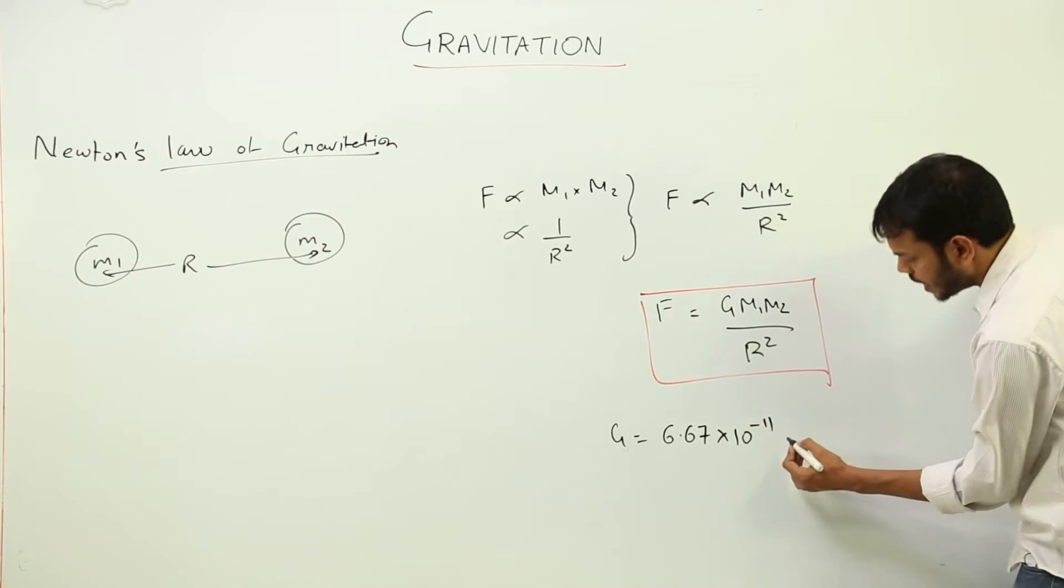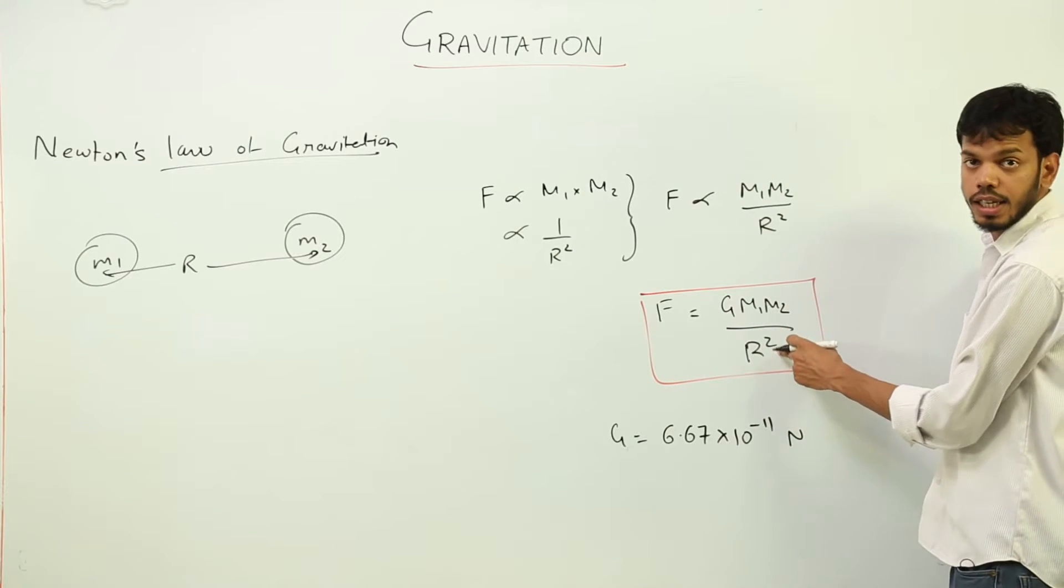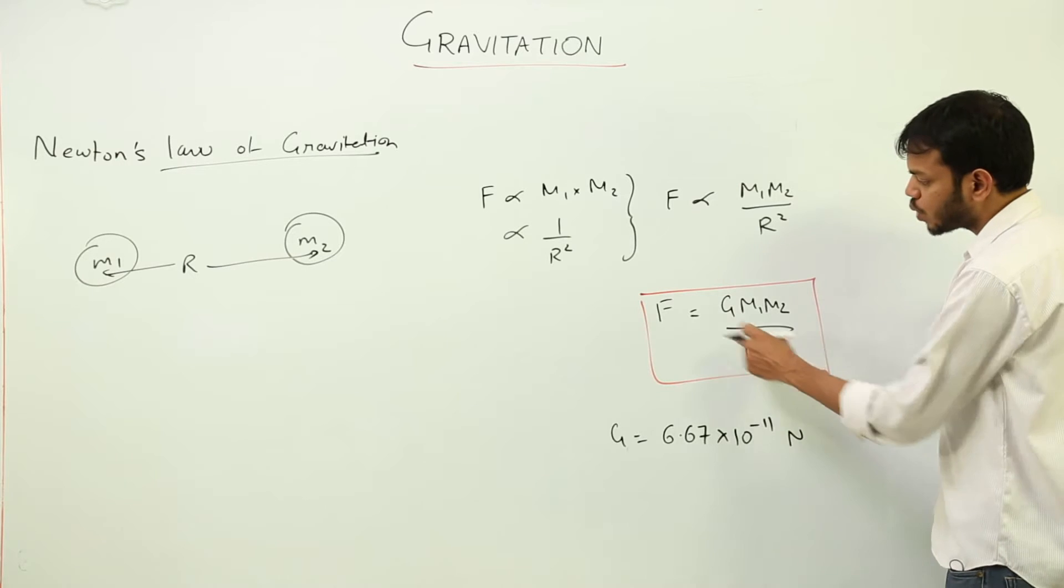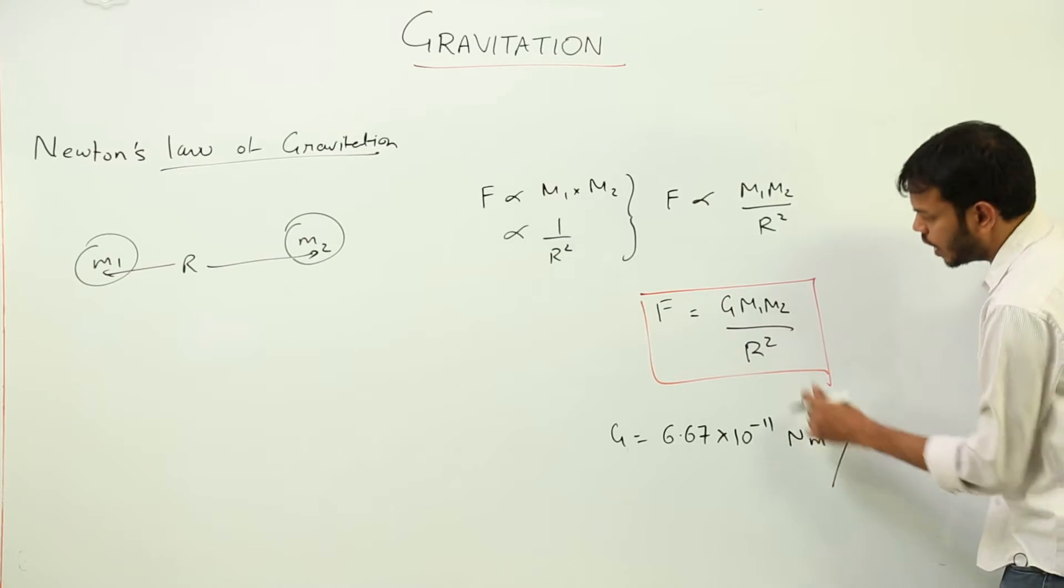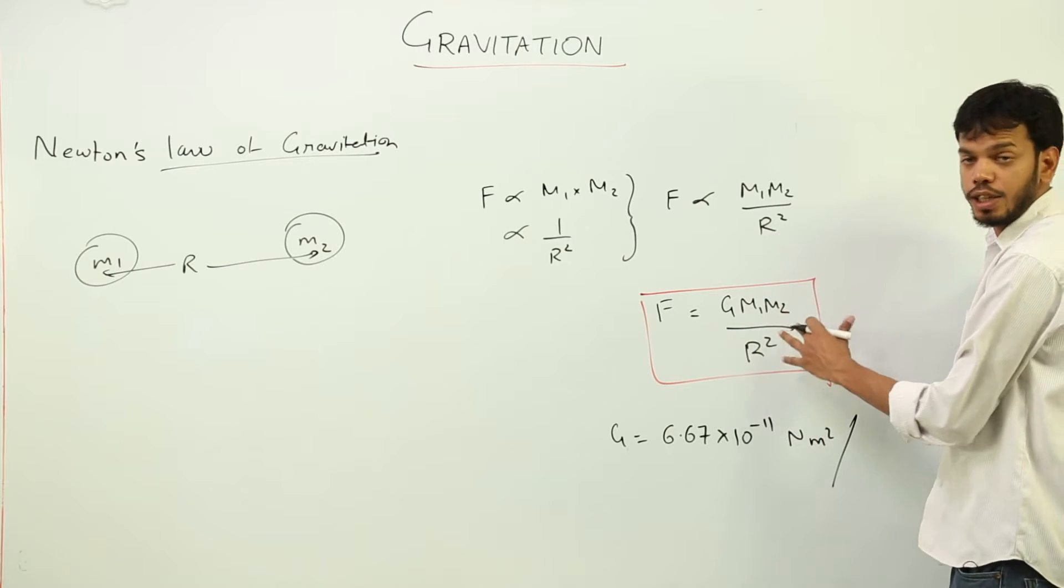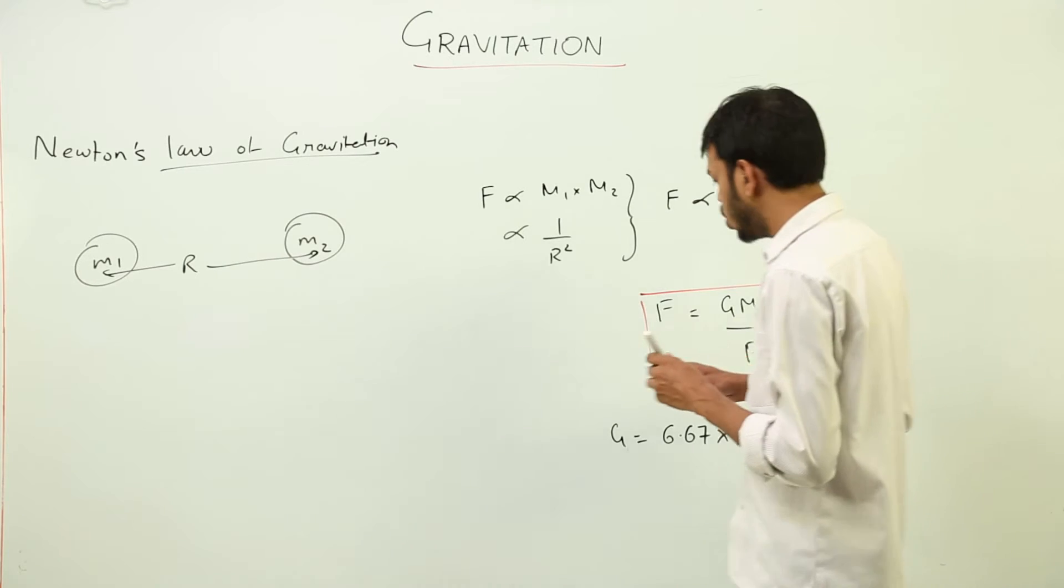You already have force, that is Newton. Then this R square, that is the SI unit is meter square. Meter square is getting multiplied with force. So Newton meter square over this mass into mass is what? Kg into kg, so kg square. So this is the SI unit of G.